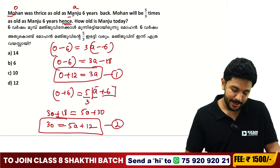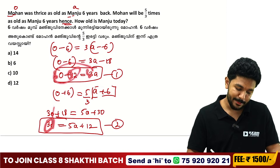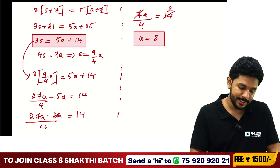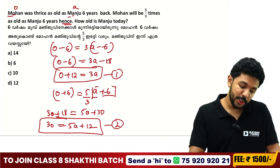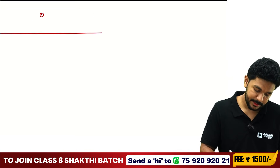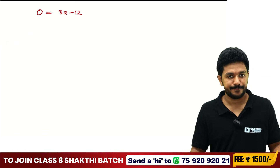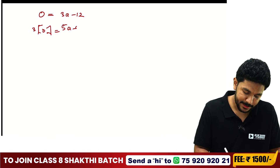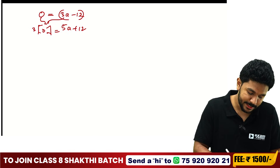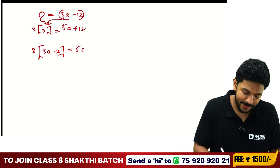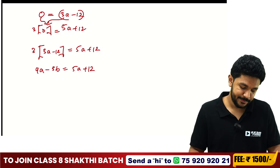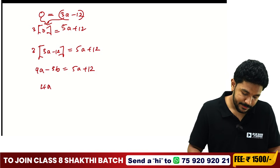Multiplying through: 3 times O plus 6 equals 5 times A plus 6, giving 3O plus 18 equals 5A plus 30. This is our second equation. From the first equation, O equals 3A minus 10. Substituting: 3 times 3A minus 10 plus 18 equals 5A plus 30, which simplifies to 4A equals 36, so A equals... we divide to get the answer.